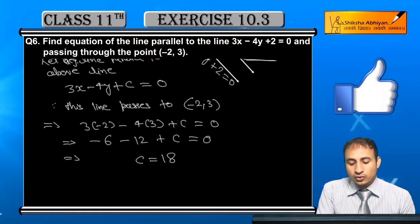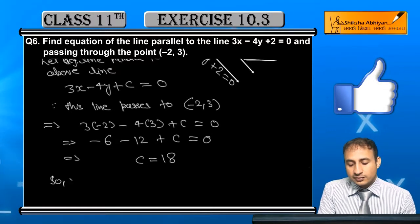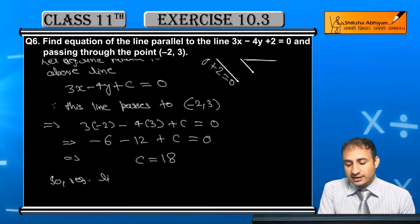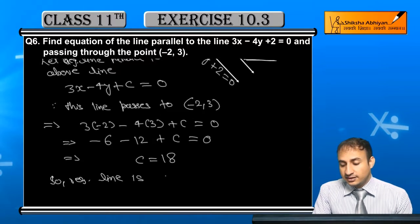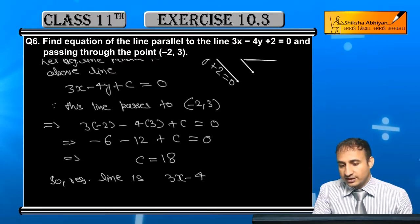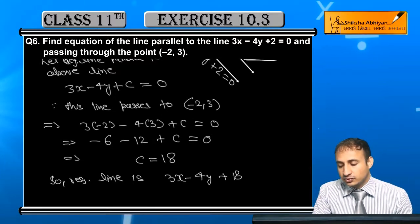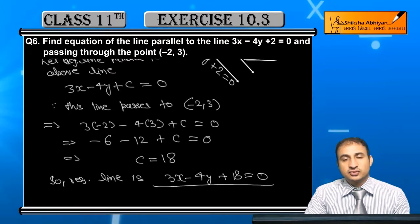So the required line is 3x minus 4y plus 18 equals 0. Now see the next option.